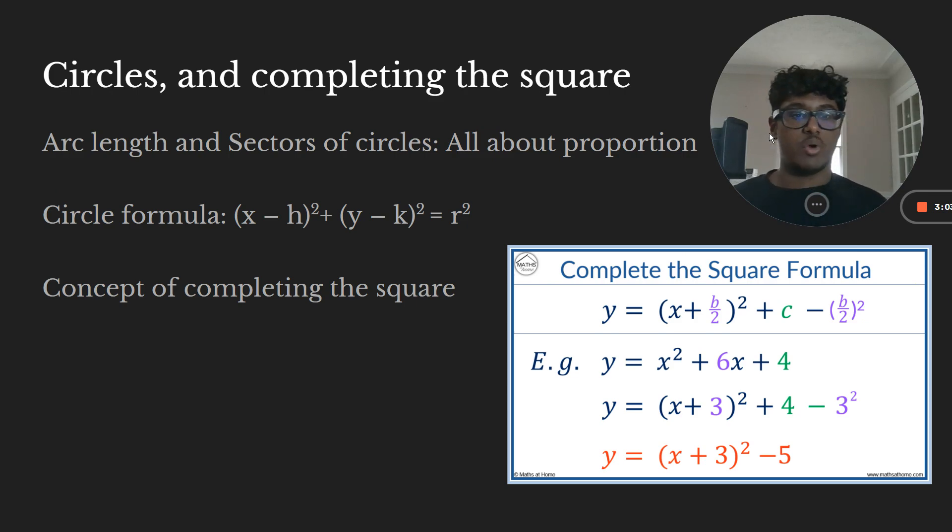And here's the concept of completing the square. Basically this is the most complex part, but it's still not that hard to understand. Basically you have a certain quadratic function and you need to complete the square in order to turn it into the circle formula. So what you do is you isolate the value, you want to create basically at the top there, X plus B over two squared, right?